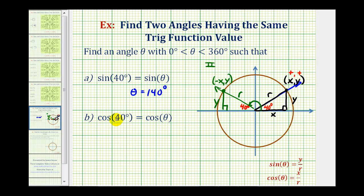Now for part b, we have cosine 40 degrees equals cosine theta. And since cosine theta is equal to x divided by r, we're looking for an angle that has a reference angle of 40 degrees and the x-coordinate is the same as this point here.